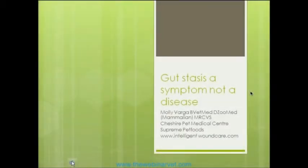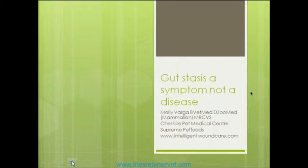As Anthony said, I wanted to talk about ileus in the rabbit. One of the common things I see is that it's treated as a disease in and of itself, but I want to highlight the fact that we need to look a little bit further. I want to start by going through some of the physiology and anatomy — how the rabbit gut works — and highlight very obvious clues that can be equally significant in the clinical exam when looking for a cause of this disease.